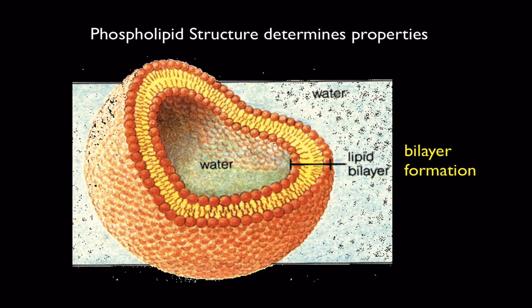If you put phospholipids in water and shake them up, they're going to form droplets of a double layer of phospholipids encapsulating some water with water on the outside — the only way these molecules can arrange themselves so that their fatty acid tails are away from the water molecules. You get a foamy, bubbly solution. This is an elementary way to form a bilayer. This structure is not necessarily alive, but it's how you can get a cell membrane-like structure just by putting phospholipids in water and agitating it.